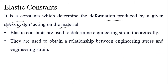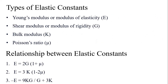An elastic constant is a value that determines the deformation produced by a given stress system acting on a material. Elastic constants are used to determine engineering strain theoretically and to obtain the relationship between engineering stress and engineering strain. The types of elastic constants are: Young's modulus (modulus of elasticity, E), shear modulus (modulus of rigidity, G), bulk modulus (K), and Poisson's ratio (mu).